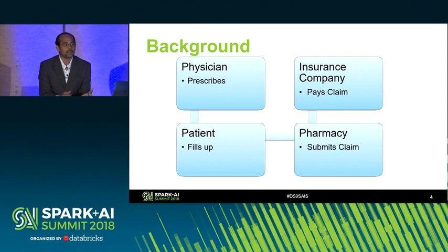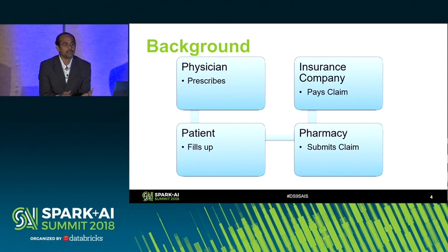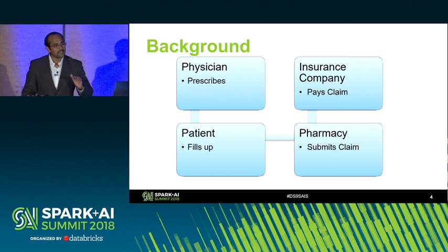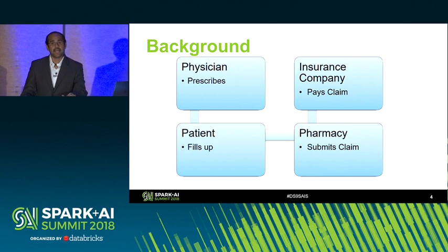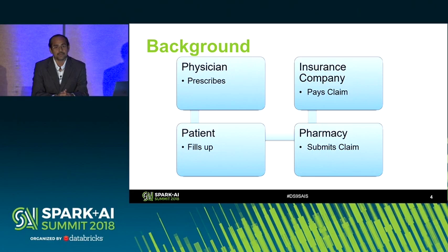Let us see how prescriptions work. At the eagle-eye view, patients visit a doctor. Doctors monitor and check the patient's medical conditions, prescribe medicines, and the patient walks to the pharmacy store and collects the medicines. What actually happens in the background is: as soon as the patient receives an e-prescription from the doctor — the patient is not given a paper prescription — they specify which pharmacy store they want to receive their prescriptions from, and the doctor sends it there electronically.